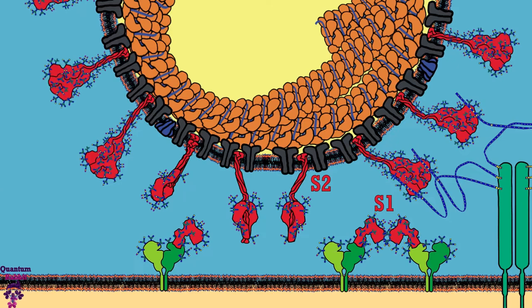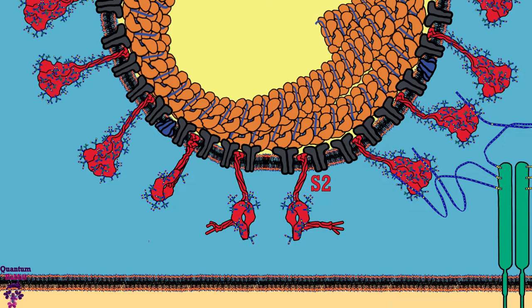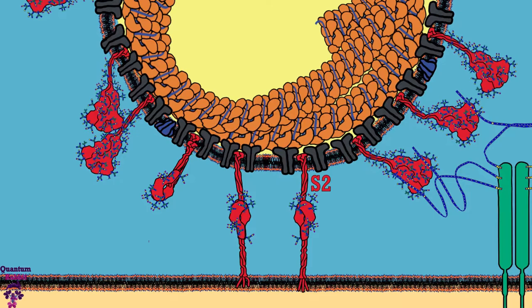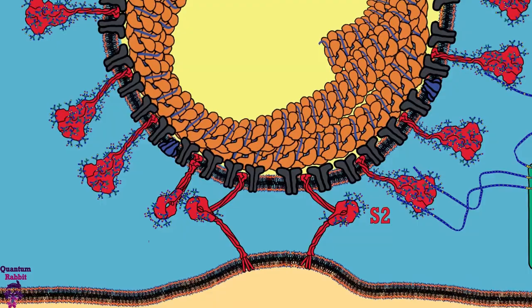The S1 part remains attached to the ACE2 and the S2 part begins to fold itself, extending towards the cell membrane. At the end of the S2 part there is a series of hydrophobic amino acids that anchor into the cell membrane, and this is why it is very important that it gets activated once positioned on a membrane.